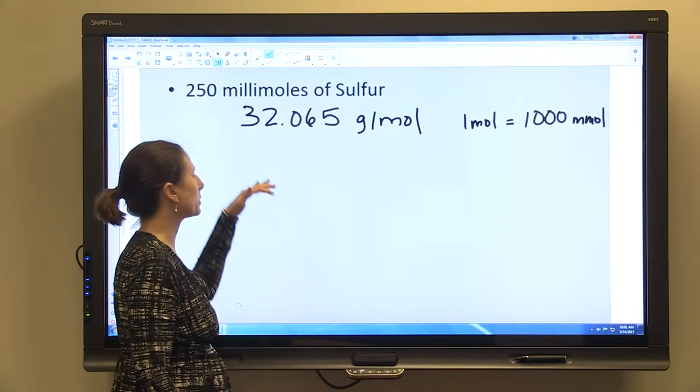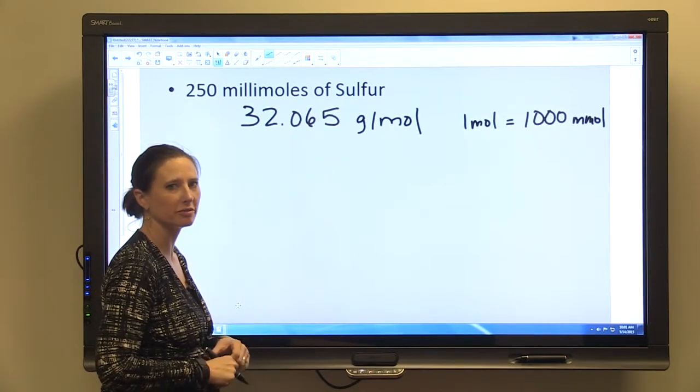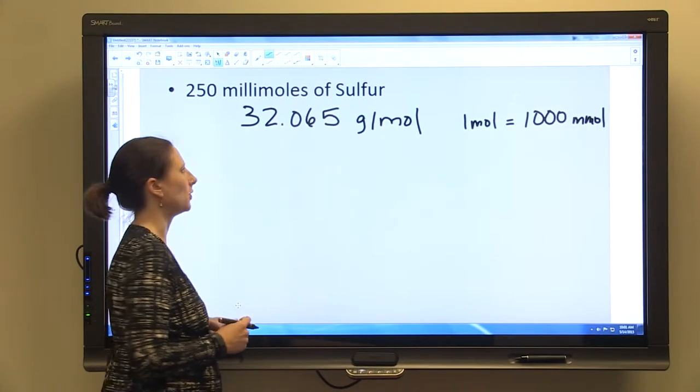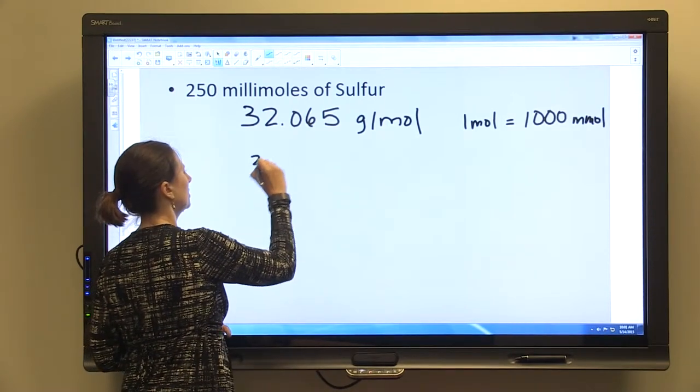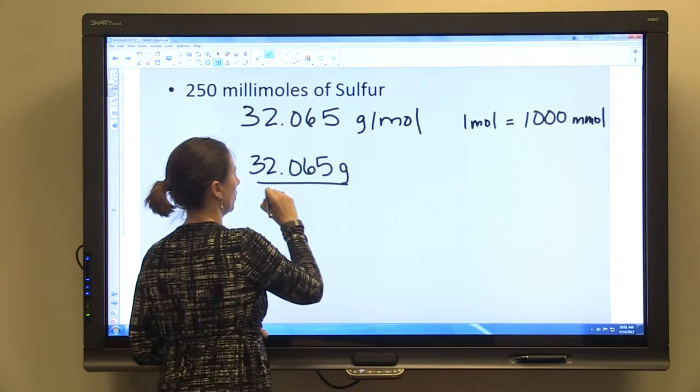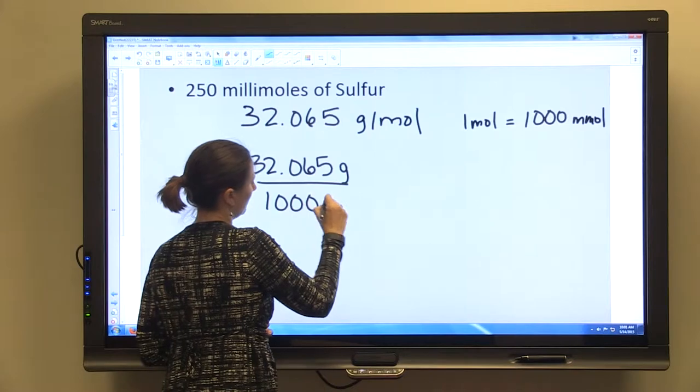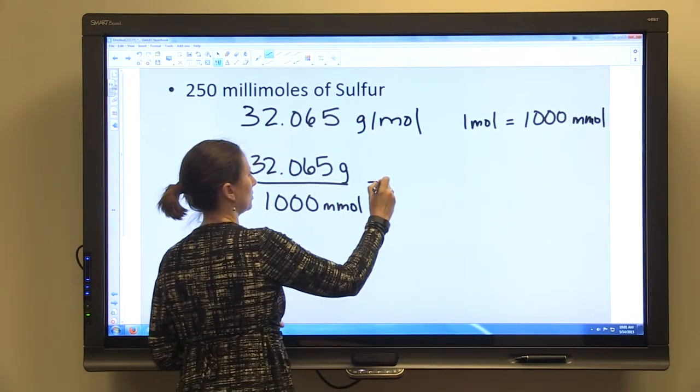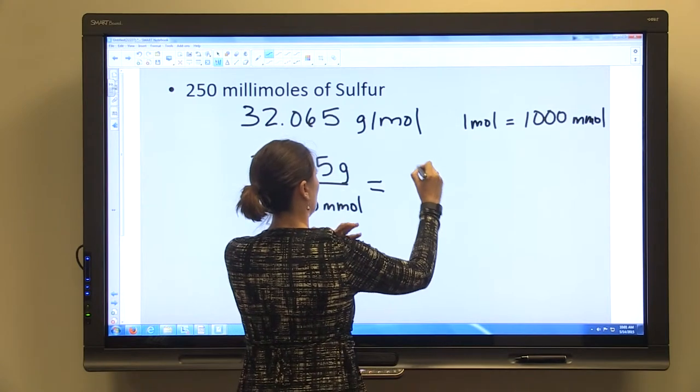We know that one mole equals 1,000 millimoles. So when we set up our proportion to solve for 250 millimoles, we'll just substitute 1,000 millimoles for one mole. So we'll have 32.065 grams per 1,000 millimoles is equal to x out of 250 millimoles.